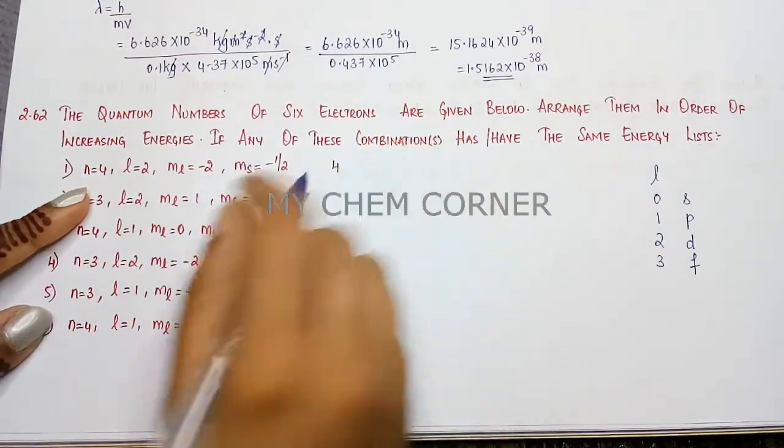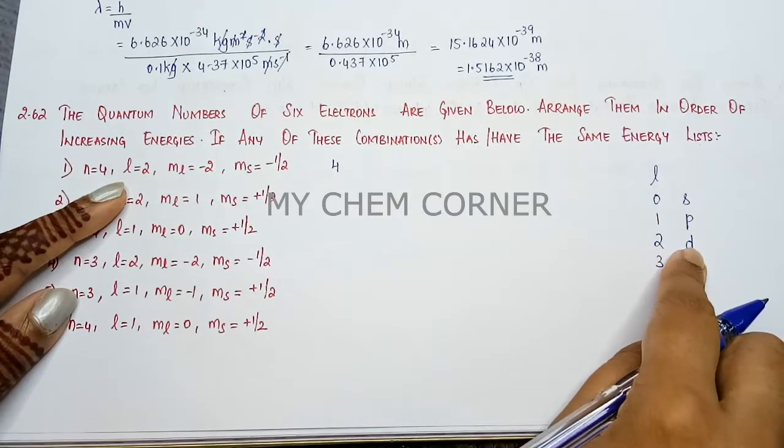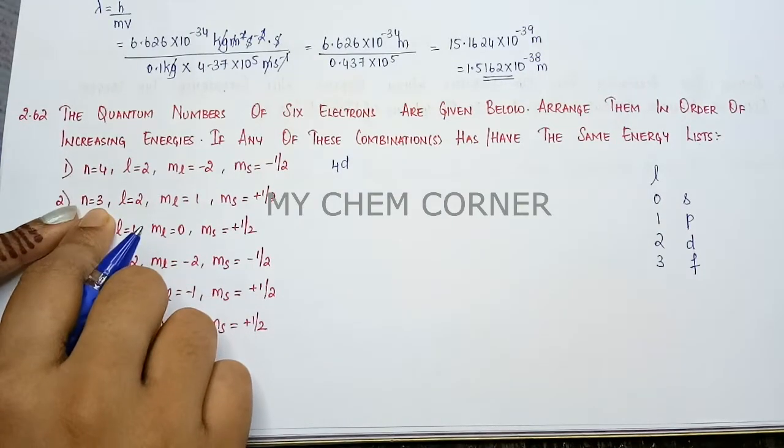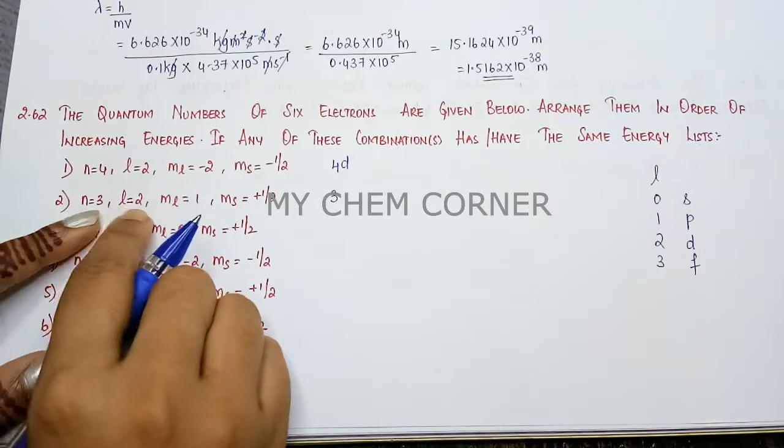This is going to be 4. l value is 2, so when l is 2, the orbital is d. So we write 4d. Next one, the n value is 3, so we write 3. l value is 2, so when l is 2, again it is d orbital. So this is 3d.